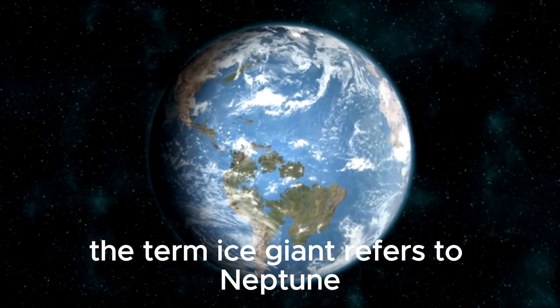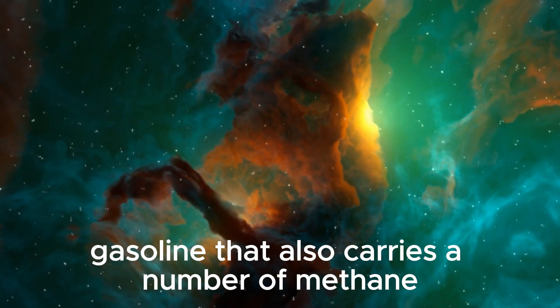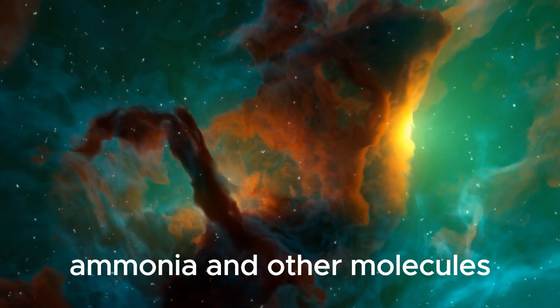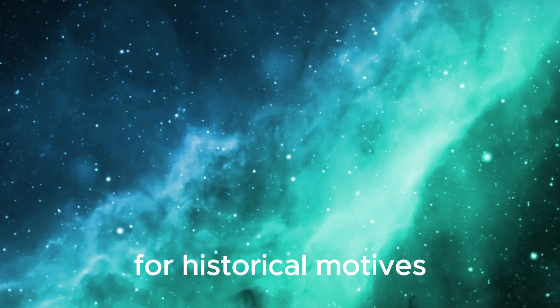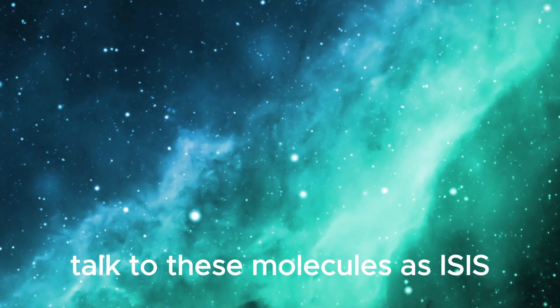The term ice giant refers to Neptune, which is essentially a massive ball of hydrogen and helium gasoline that also carries a number of methane, ammonia, and other molecules. For historical motives, planetary scientists nevertheless talk to these molecules as ices.